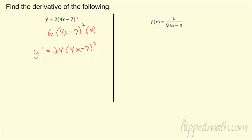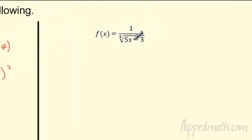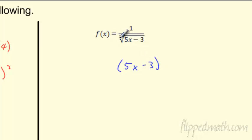Chain rule is pretty awesome. One more, and we're going to up the ante a little bit. What if it's in the bottom of a fraction? No problem — I just need to rewrite it. So this is really (5x-3); it's a third root, so I take it to the 1/3 power. And since it was in the bottom, I make the exponent negative. We can rewrite these things — no problem.